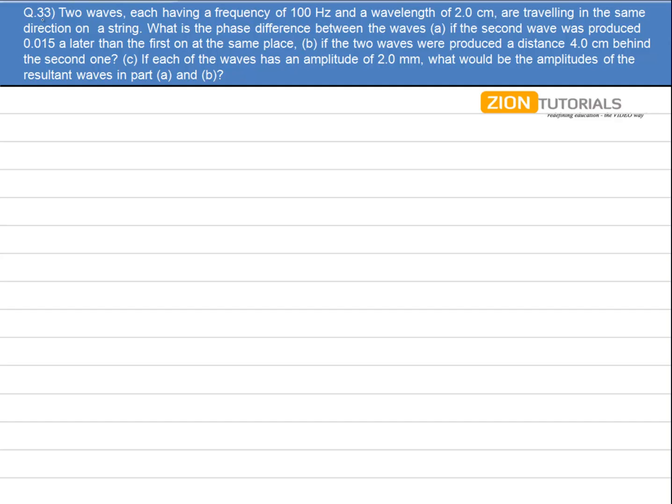If the two waves are produced at a distance of 4 cm behind the second wave. Let's solve the first part.